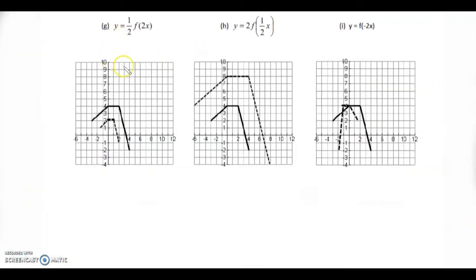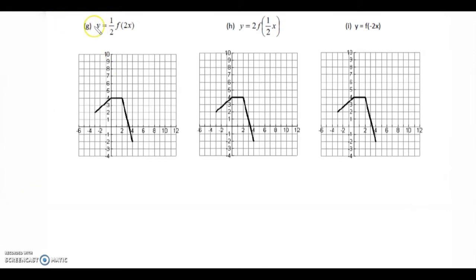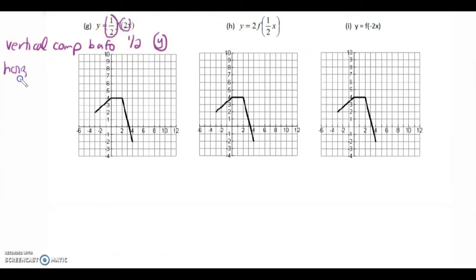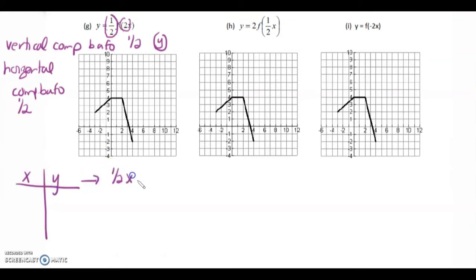We have two transformations in G. This is a vertical compression by a factor of one half — with vertical, it affects the y. And this one, because it looks like a 2, it's actually a horizontal compression by a factor of one half as well. So with the x and y, we map it onto one half x because it's compression, and one half y. Original values: negative 3, 0, 2, 4 for x, and 2, 4, 4, negative 2 for y.